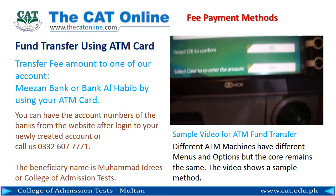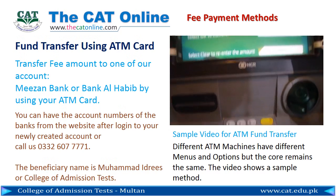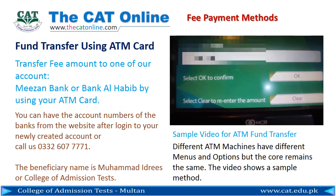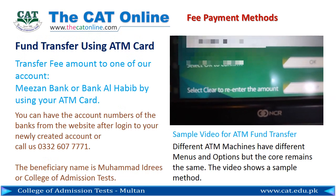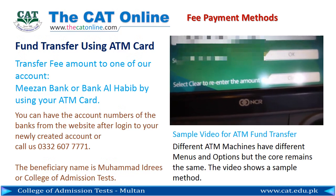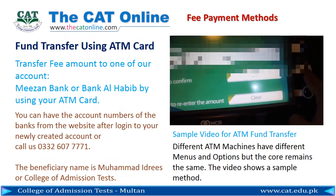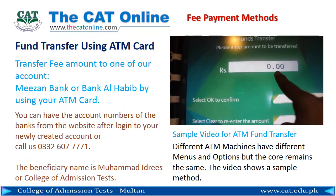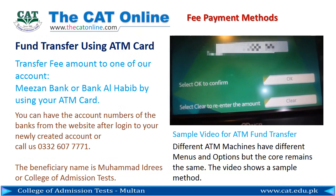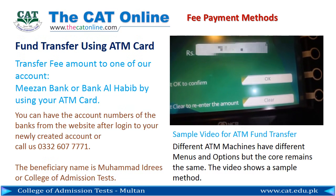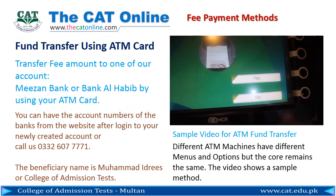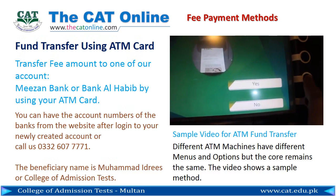In the next menu, enter the account number of the CAT Online that you have noted from the website. After entering the account number, select OK. Enter the fee amount and press OK. The system asks whether you want a receipt or not. Press yes.